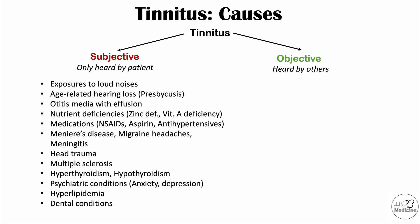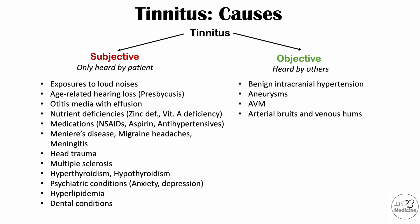Objective tinnitus, also known as somatosound, is the other condition. Some clinicians may only describe this as somatosound because this type of tinnitus can actually be heard by others. In certain cases, if there are changes to blood flow in the head, this can be heard by a clinician. The most common cause is benign intracranial hypertension, but we can also see it with aneurysms, arteriovenous malformations (AVMs), arterial bruits, venous hums, and carotid stenosis.